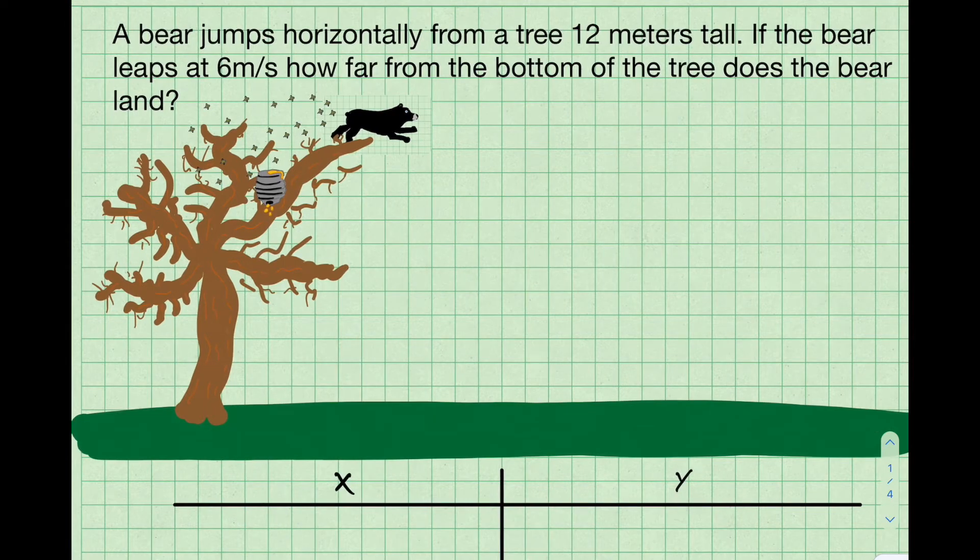So the bear is going to jump out of the tree. The tree is 12 meters tall. That is a pretty tall tree, roughly four stories, because we estimate three meters is about one story. And it's traveling at six meters per second, so about 12 miles an hour. And the question is, what is the range of the bear, which is another way of saying how far from the bottom of the tree does the bear land?